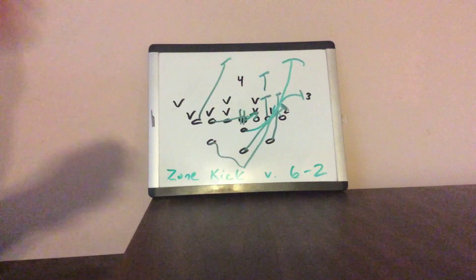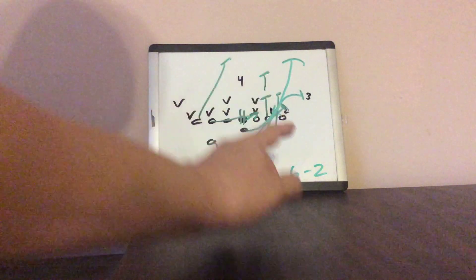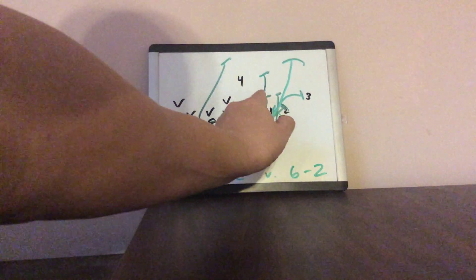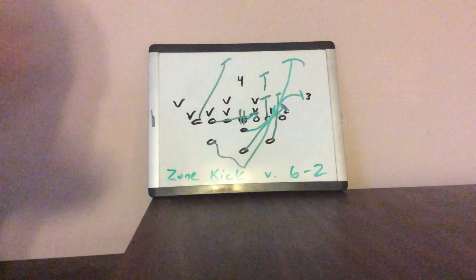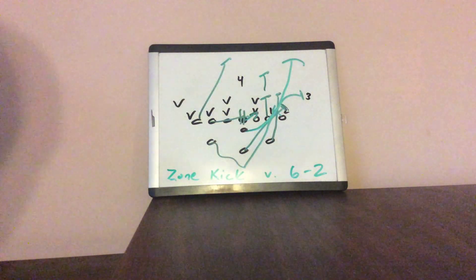to double the two technique. The guard's making an ace call. The tackle is going to veer inside and he's going to block the mike to the free safety. The backside scoops. Backside receiver cuts off. And here's what happens